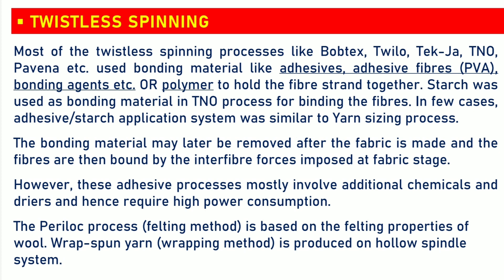Polymer is used to hold the fiber strands together. Starch was used as bonding material in the TNO process for binding the fibers. In few cases, the adhesive or starch application system was similar to the yarn sizing process. The bonding material may later be removed after the fabric is made, and the fibers are then bound by inter-fiber forces imposed at the fabric stage. However, these adhesive processes mostly involve additional chemicals and dryers, and hence require high power consumption. The Perilog process is based on the felting properties of wool, and rep spun yarn is produced on a hollow spindle system.